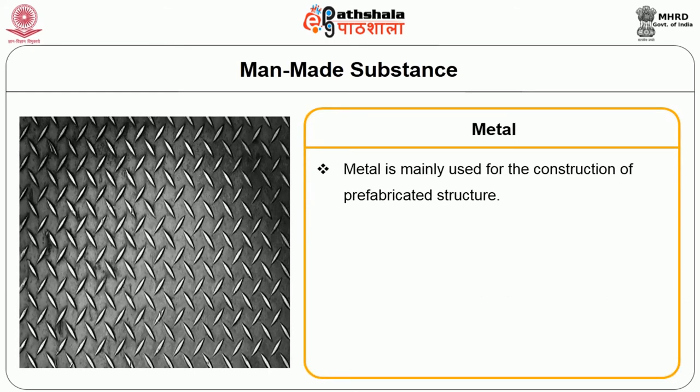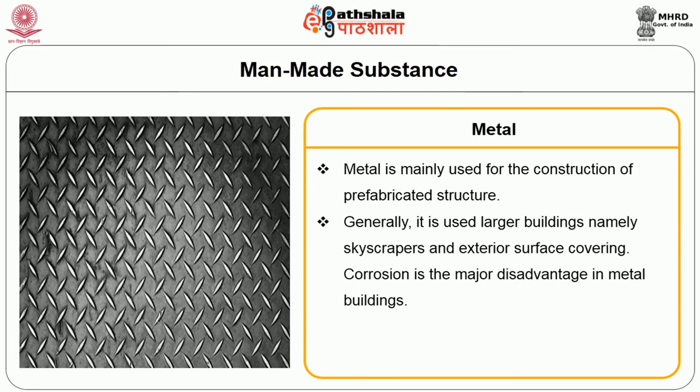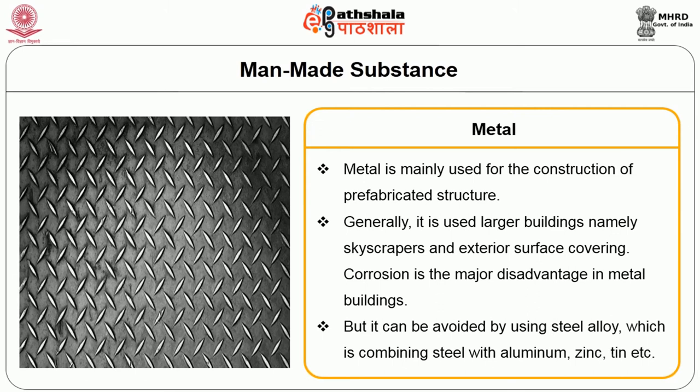Metal is mainly used for the construction of prefabricated structures, generally for larger buildings namely skyscrapers and exterior surface coverings. Corrosion is the major disadvantage in metal buildings, but it can be avoided by using steel alloy which combines steel with aluminum, zinc, tin, etc.